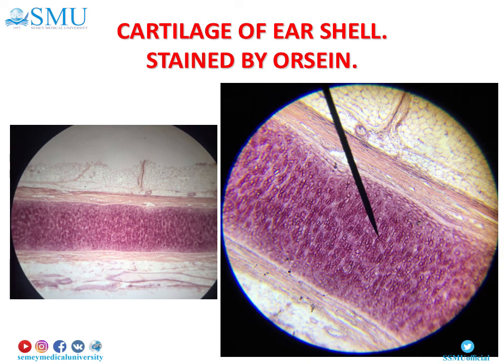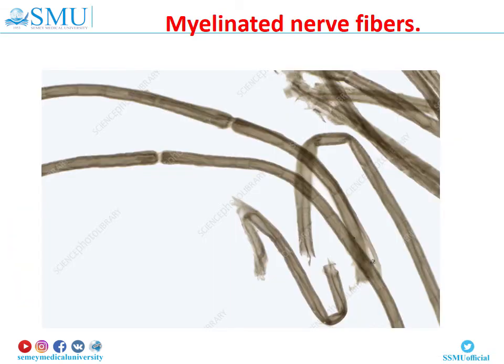The next slide shows us cartilage of the ear shell, stained by orcein. The arrow shows isogenous groups of chondrocytes. Orcein usually stains elastic fibers, so the ear shell includes elastic cartilage which is rich in elastic fibers stained by orcein. In this slide, myelinated nerve fibers are visible, stained by osmic acid. Osmic acid reveals lipids which are present in the myelin sheath of myelinated nerve fibers, so they are stained into brown color.